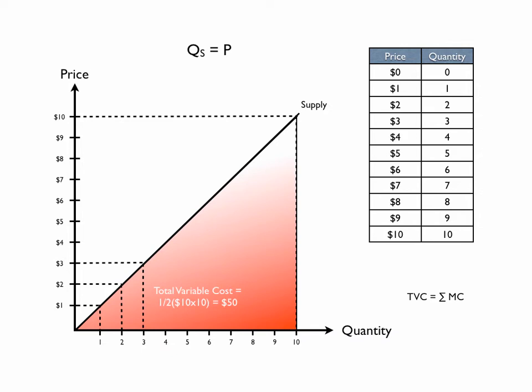Variable costs do not include fixed costs. So if I have an ice cream store, the building and insurance would be fixed costs. My variable costs would be the cream, the cones, the electricity, and even labor to produce the ice cream. Producers are willing to supply at any price-quantity combination above the supply curve, and they're unwilling to supply any price-quantity combination beneath the supply curve. They will not be able to meet their costs if they produce in that area — any price-quantity combination below the supply curve, they're unwilling to supply.